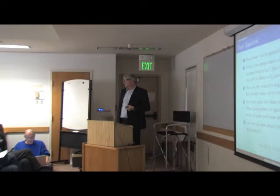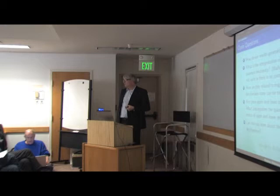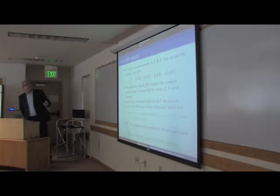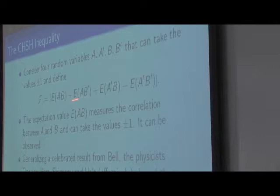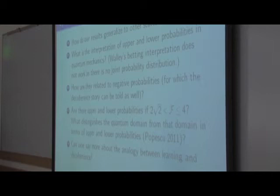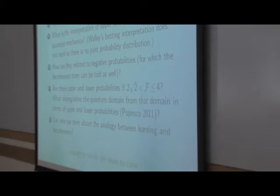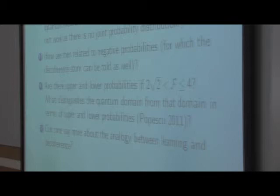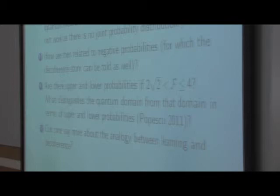It seems intuitive that negative probabilities can also, in time, become zero at some point. Another interesting question I'm currently working on is the regime between 2√2 and 4. We are looking at this quantity f, where expectation values are between minus 1 and plus 1, so in principle f could be 4. It turns out that with quantum mechanics we only get 2√2, not higher. But there is recent interesting work by Popescu and collaborators showing you can get a quantum speed-up by exploring this regime greater than 2√2. From our point of view, it would be good to see how qualitatively uppers and lowers change in that domain.